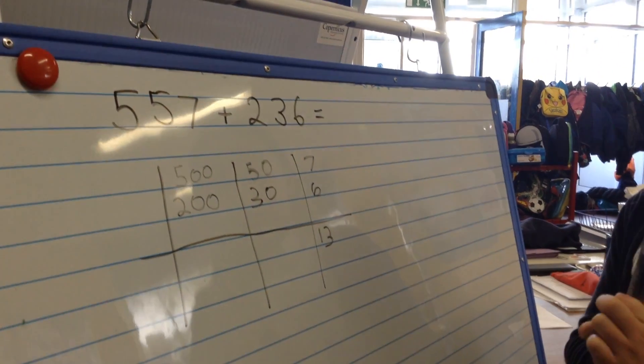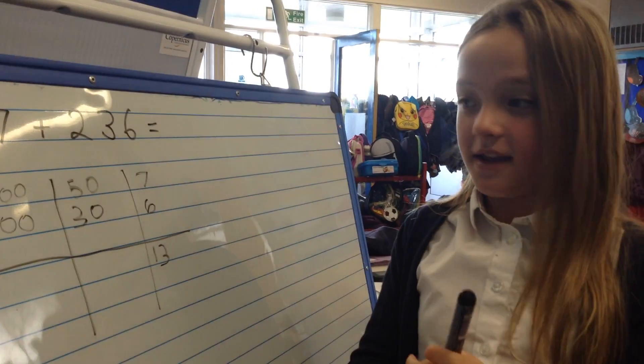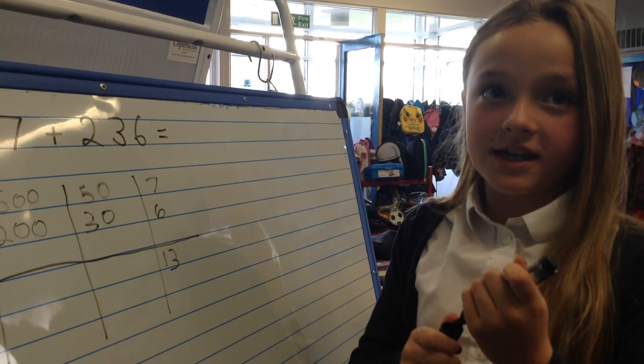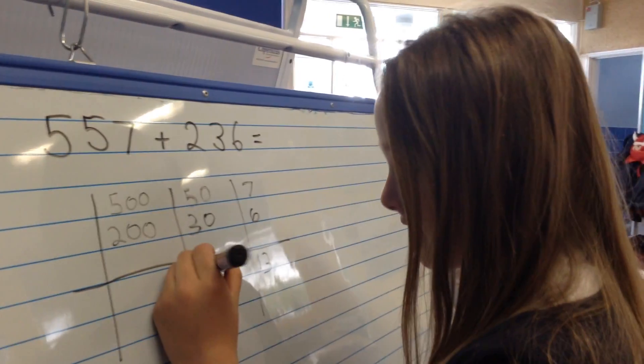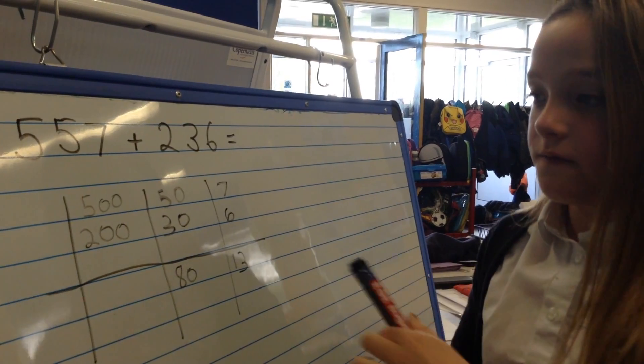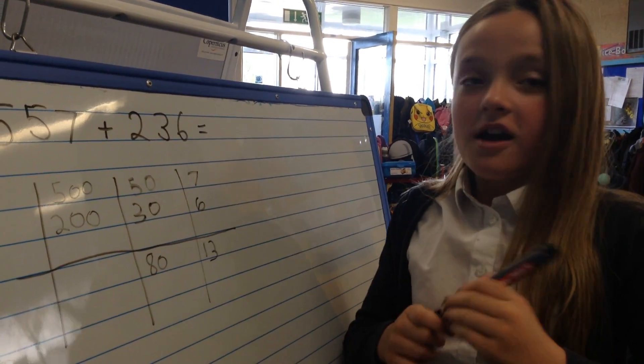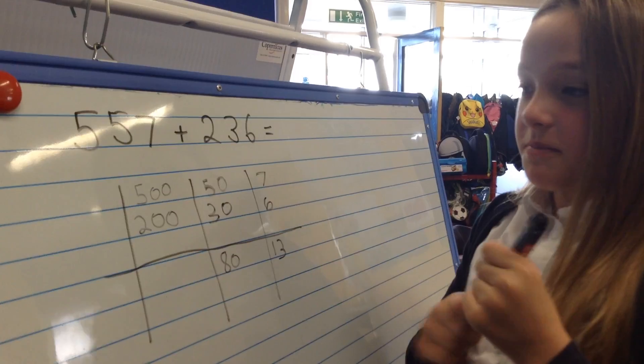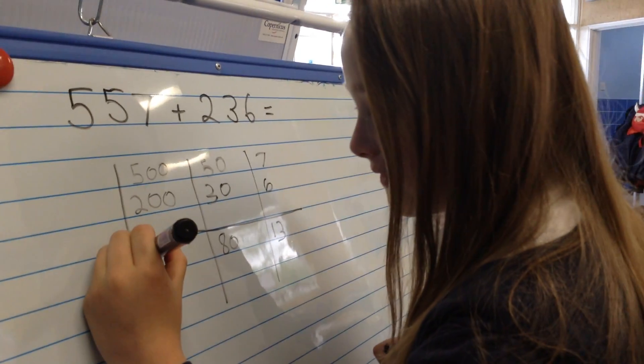And then if you know 5 and 3 is 8, then you just make it 10 times bigger which is 80. And then if you know 5 and 2 which is 7, just make it 100 times bigger which is 700.